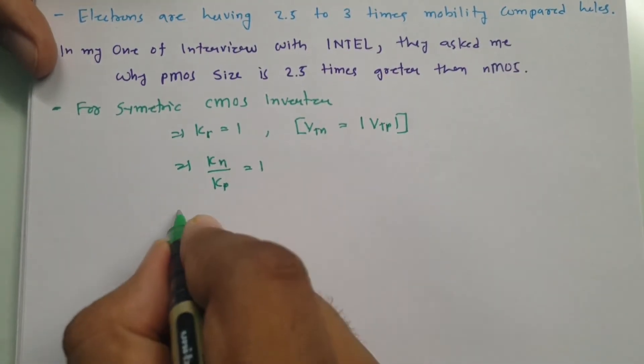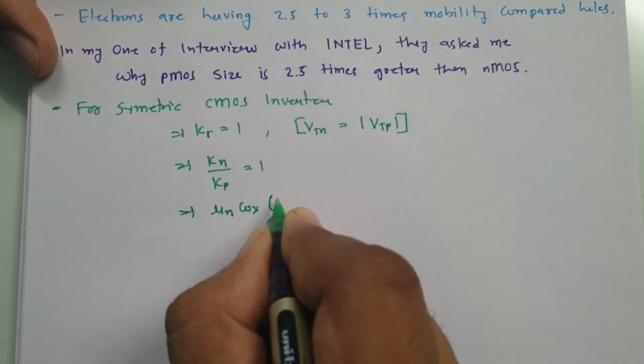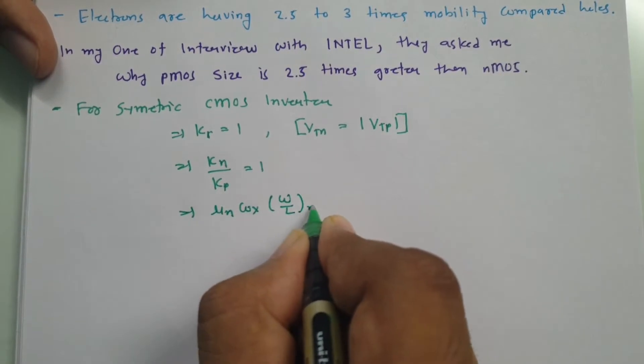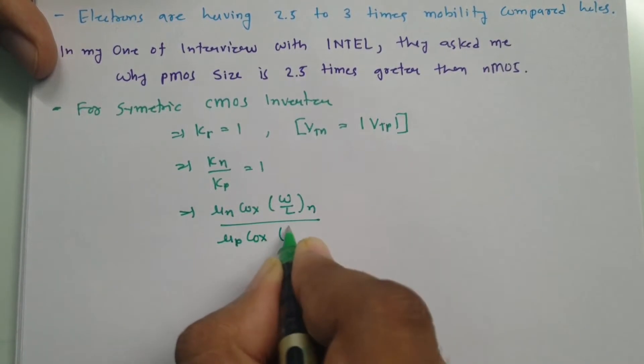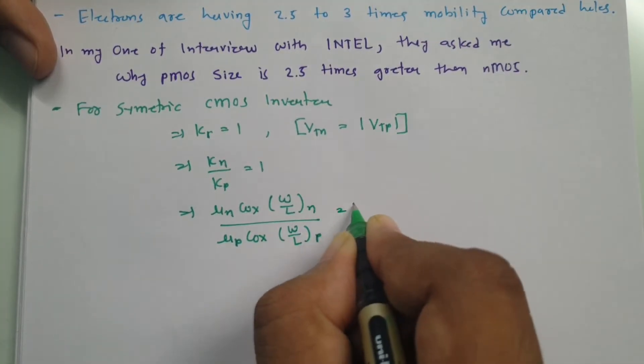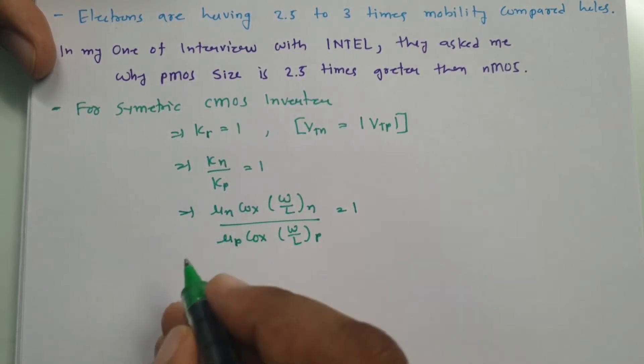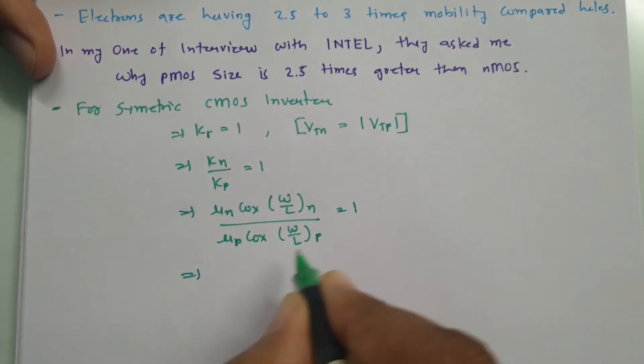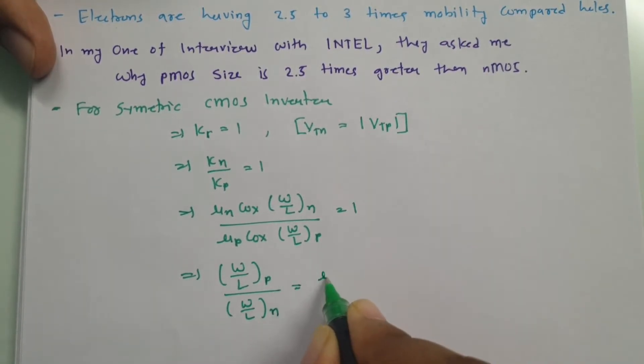If you calculate KN, then KN is mu N COX into W by L ratio of NMOS divided by KP is mu P COX into W by L ratio of P and that is equals to 1. Now you see COX that is same for both. So we will eliminate that. If you observe W by L of P divided by W by L of N, then you will be finding that is mu N divided by mu P.